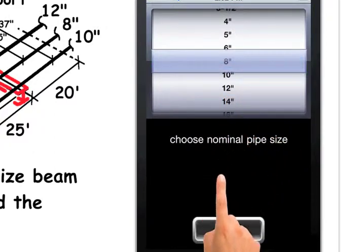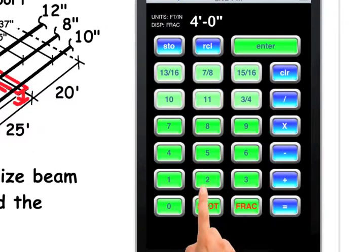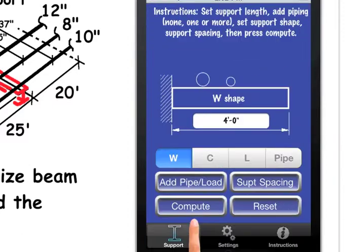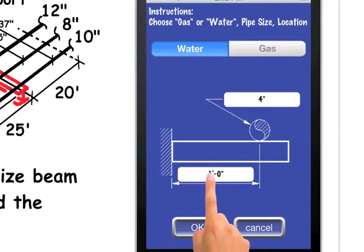Second, the 8 inch pipe which is 2 foot 1 from the edge. Lastly, a 10 inch pipe which is 3 foot 1 from the edge.